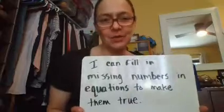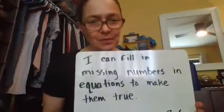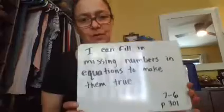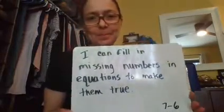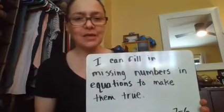And we're going to be working on focusing to make the equations on one side of the equal sign equal to the equations on the other side. So the equal sign just shows you that the value on one side is the same as the value on the other. That'll make more sense as we go along. So here is the I can statement and you could read along in the book or you can listen as I read it to you. I can fill in missing numbers in equations to make them true. 7-6 page 301. One more time. I can fill in missing numbers in equations to make them true.